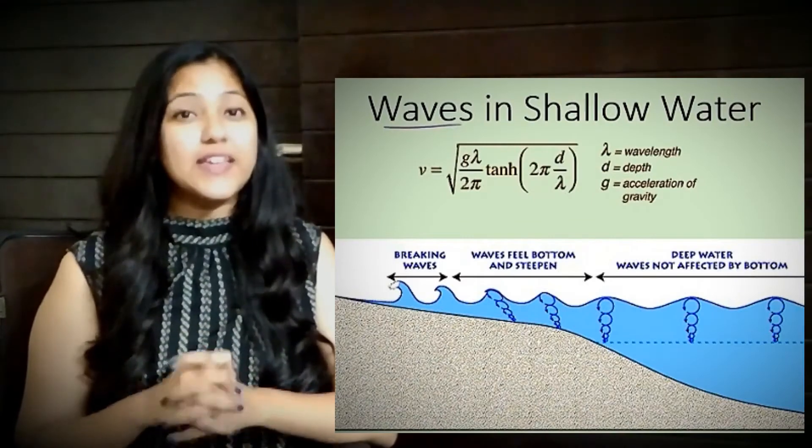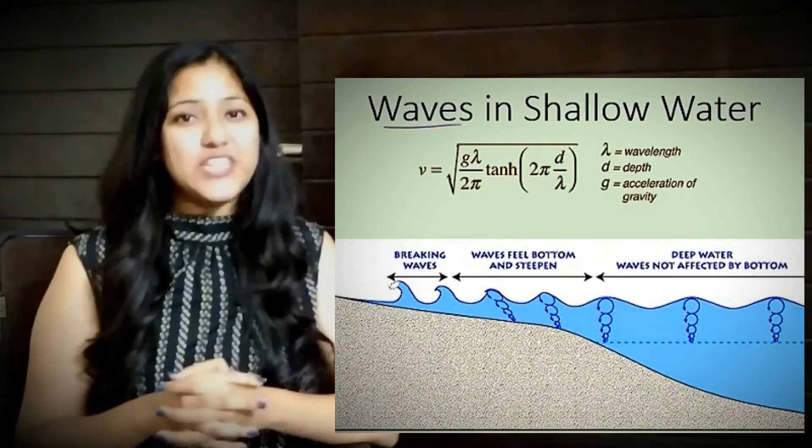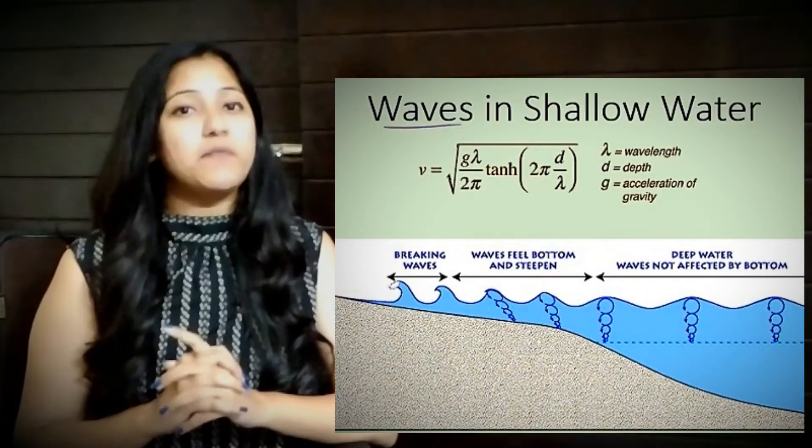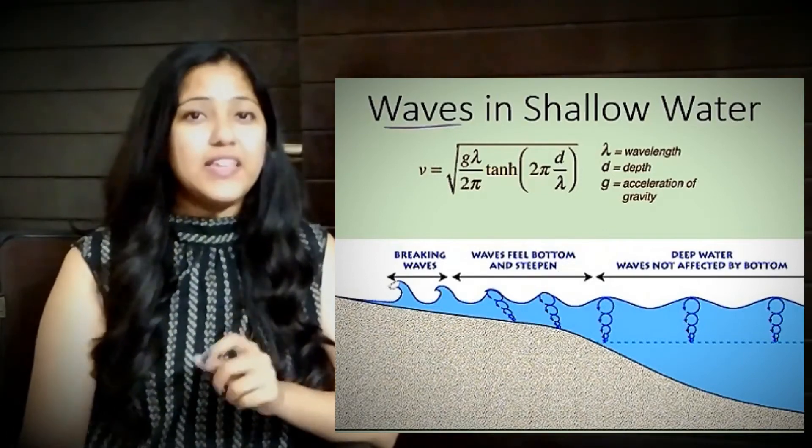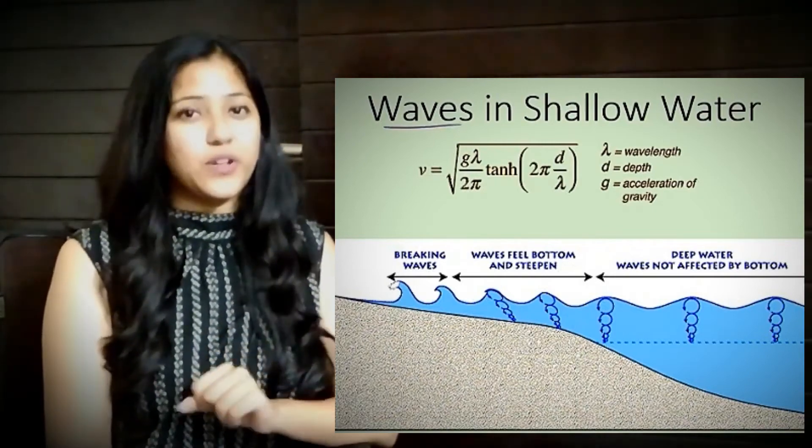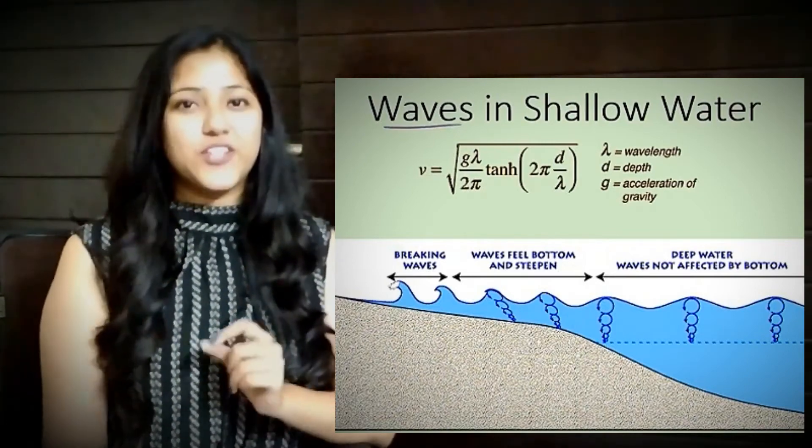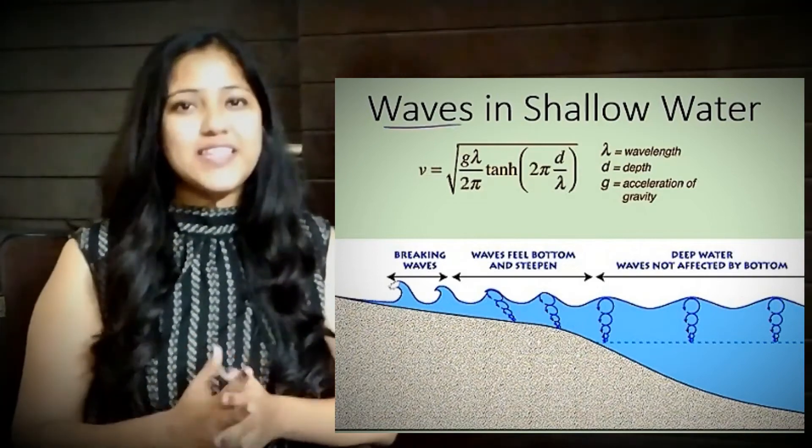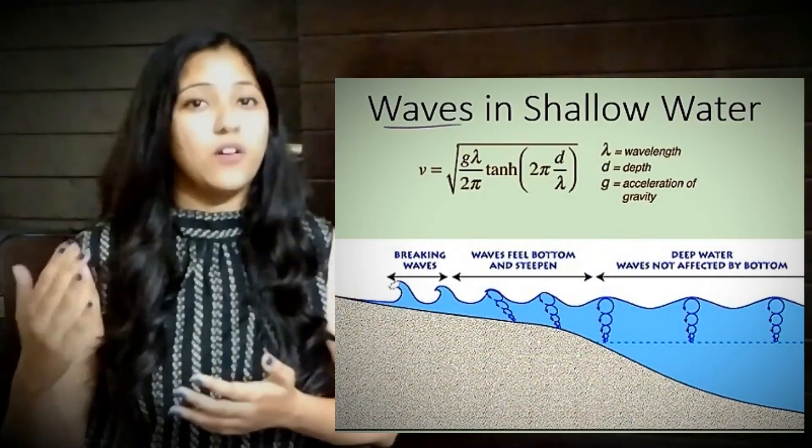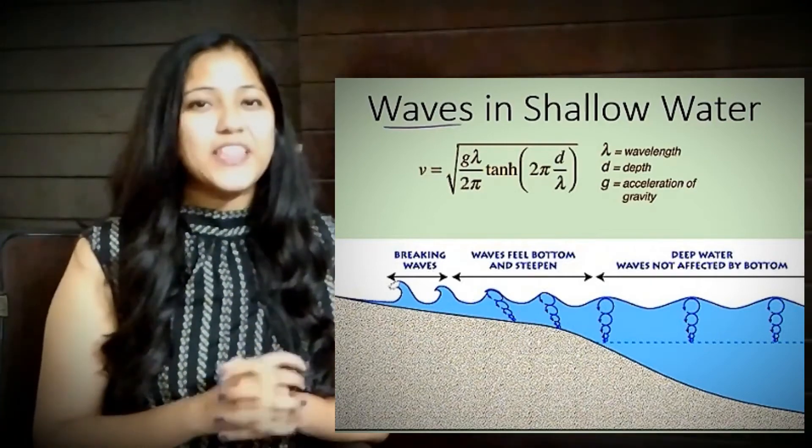Moving to the next application, the frequency of water waves in any water body is given by √(gλ/2π × tanh(2πd/λ)), where d is the depth of the water body, λ is the wavelength of the water wave, and g is acceleration due to gravity. So we see that the frequency of the water wave depends upon the depth of the water body. That is why the waves are weaker on the shore as compared to that in the middle of any water body.